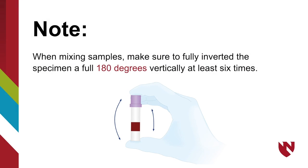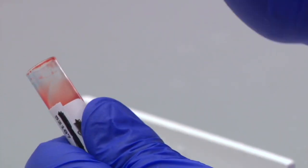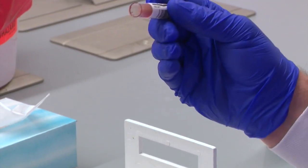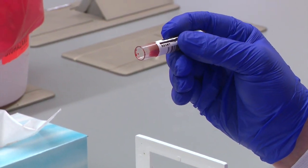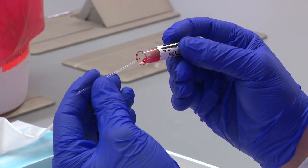Mix the EDTA blood specimen by tilting the tube approximately six times before taking the blood sample. This will allow for adequate cell suspension. Remove the cap with the tube facing away from you.